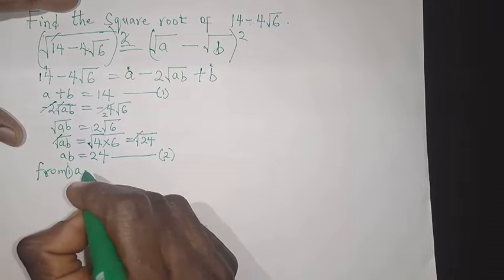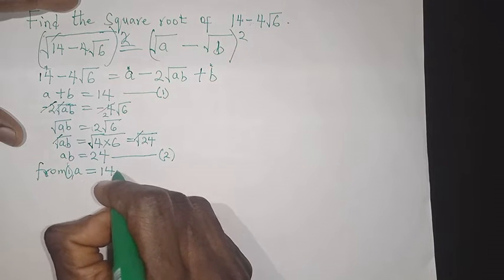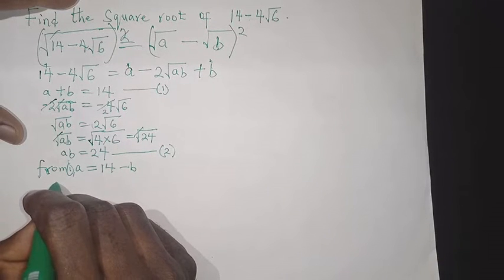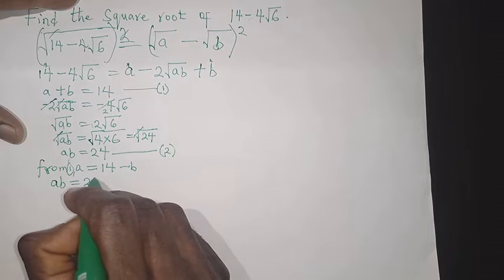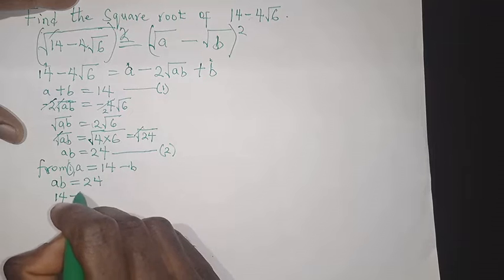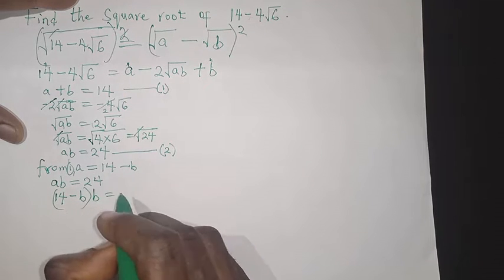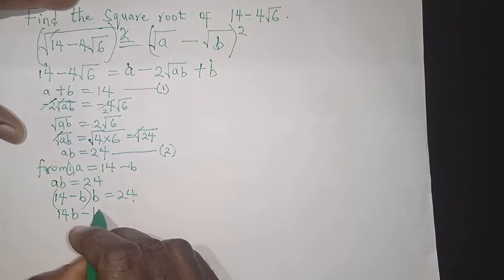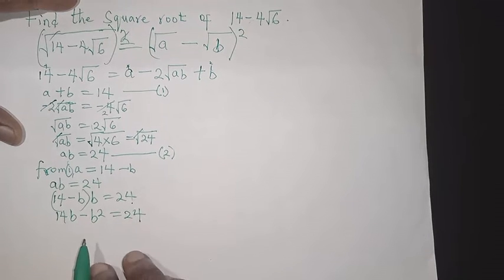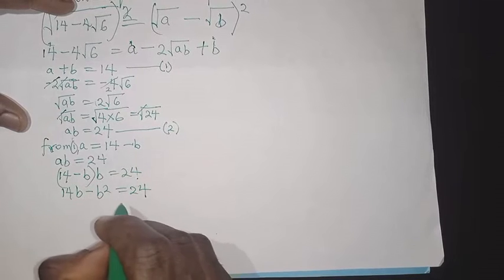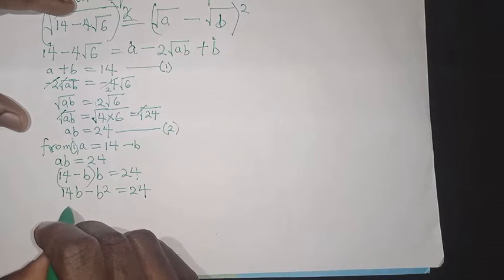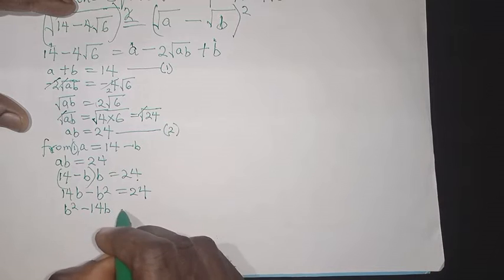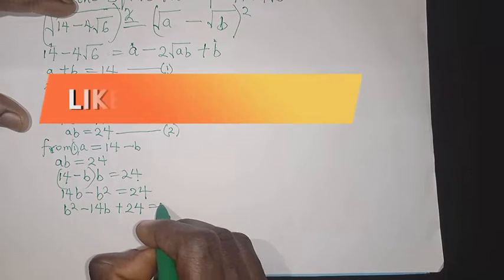From equation 1, a equals 14 minus b. Substituting into equation 2 — ab equals 24 — gives 14 minus b times b equals 24. Multiplying out: 14b minus b squared equals 24. Rearranging: b squared minus 14b plus 24 equals 0.